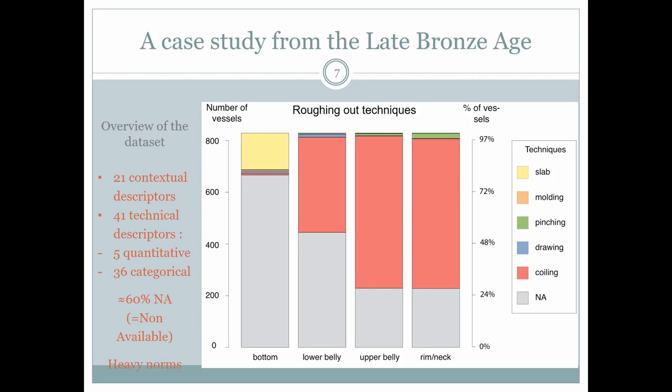The dataset is made of 62 contextual and technical descriptors, which are quantitative or categorical. Technical descriptors include nearly 60 percent of non-available data, or NAs, which is very high. An example is given by four descriptors of forming techniques referring to each part of the vessels from the bottom to the rim. We see in gray the high quantities of NAs, and in red and yellow the techniques mainly used. Other techniques are very scarce, which reveals heavy technical norms.